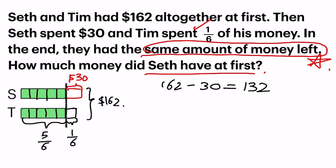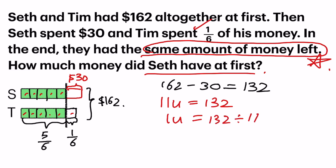Now think about it — this 132 is equal to how many units? Let's count: 1, 2, 3, 4, 5, 6, 7, 8, 9, 10 — not forgetting the last one — 11. So 11 units equals 132. I would always find one unit, so 132 divided by 11 gives me 12.